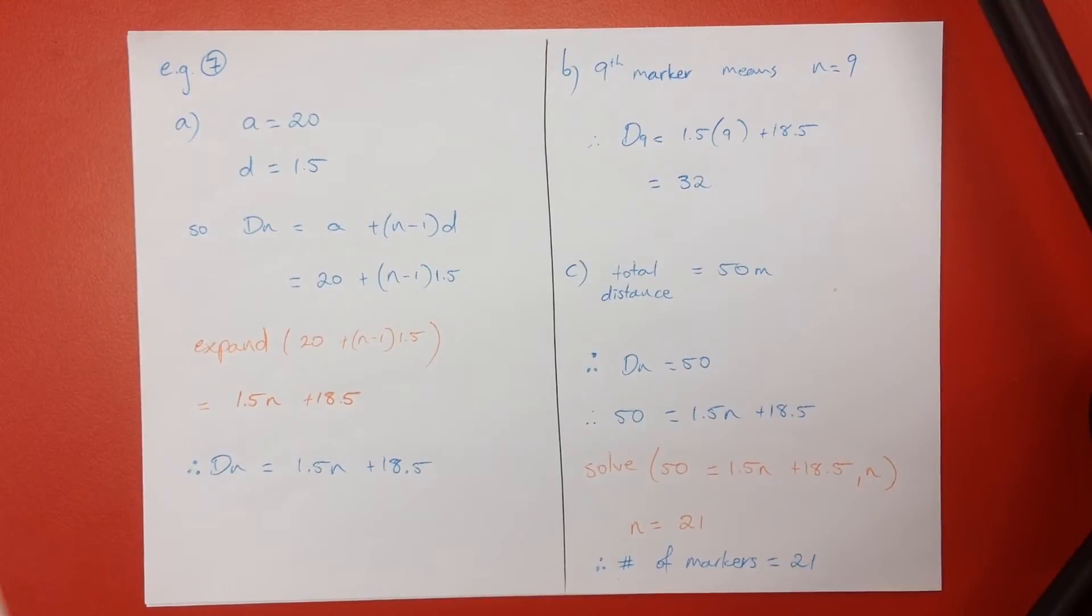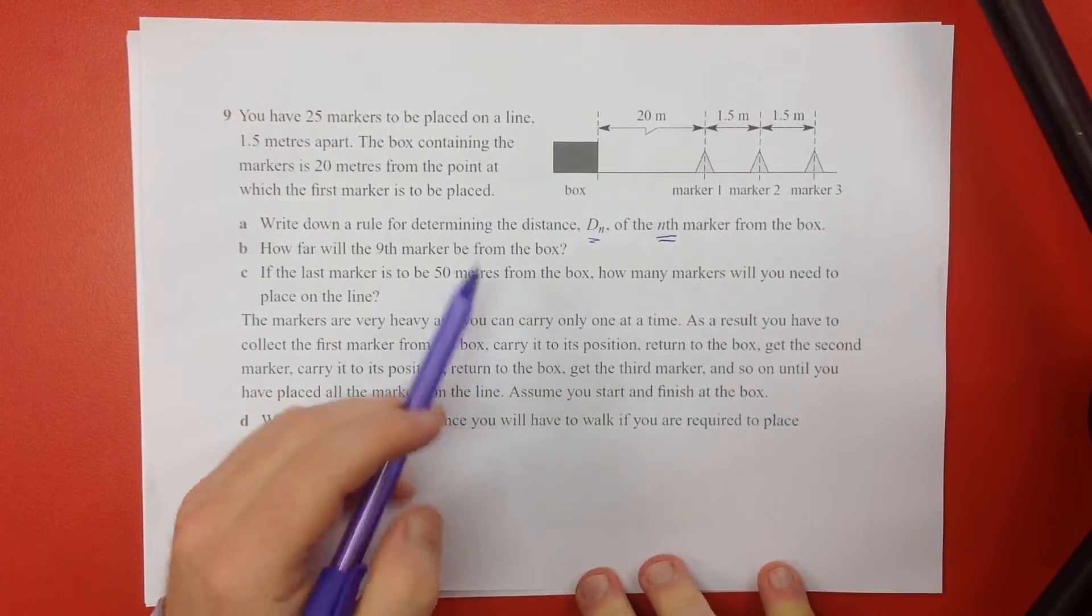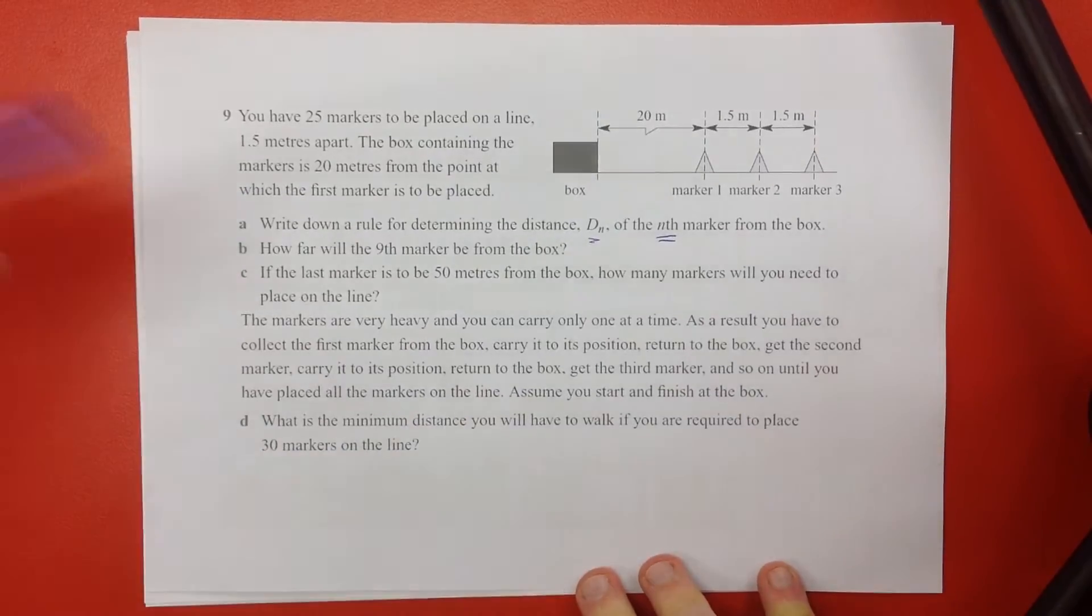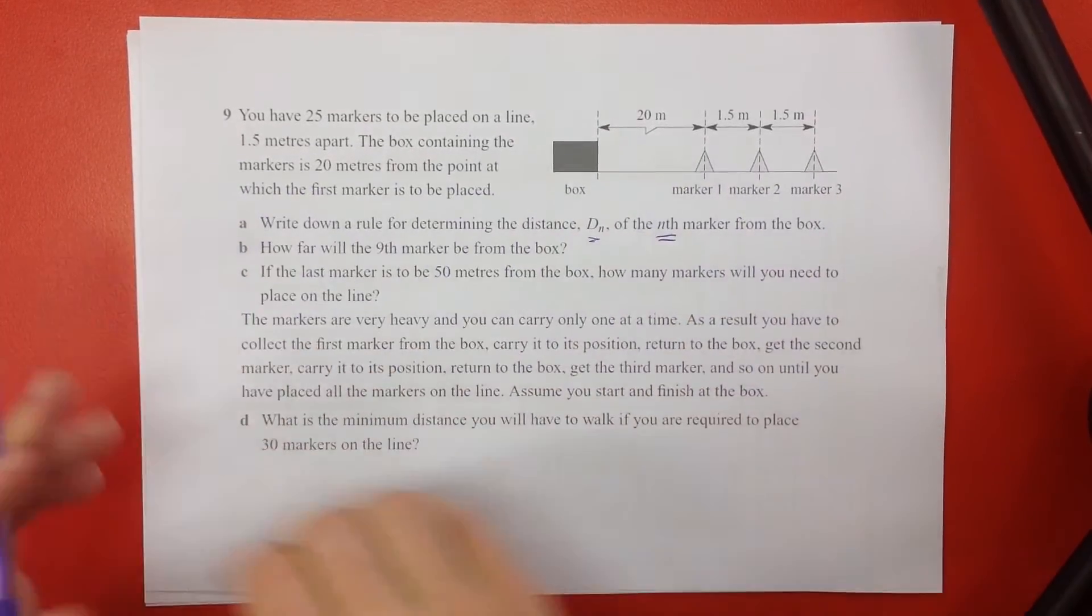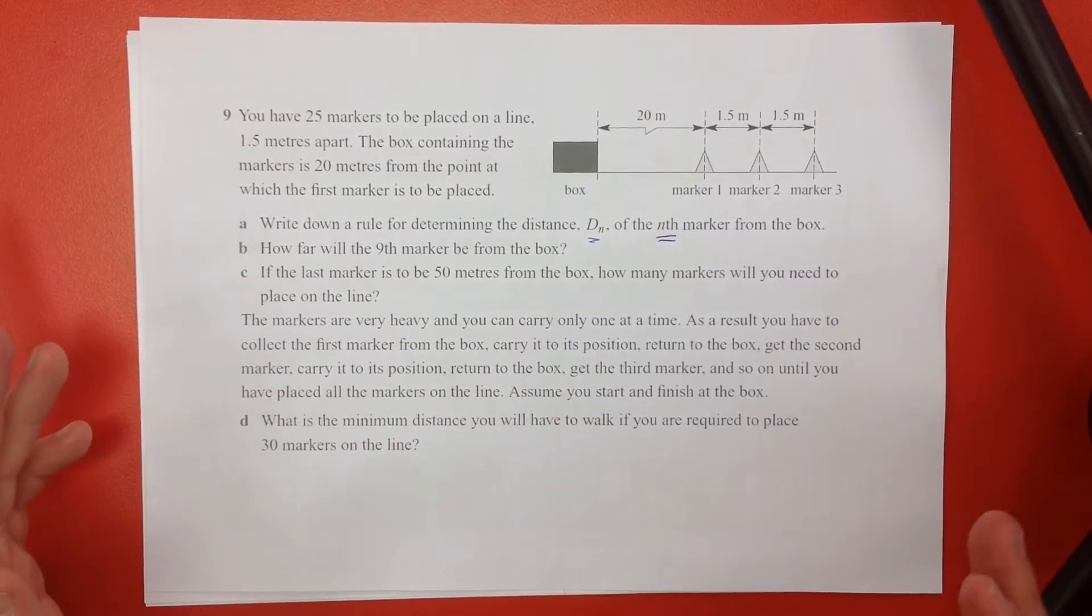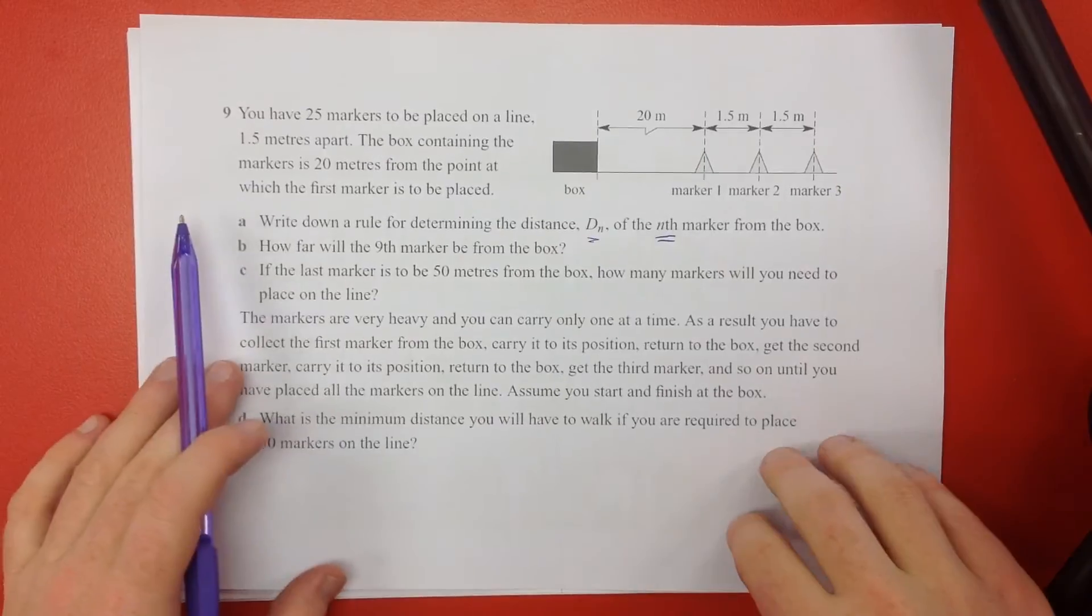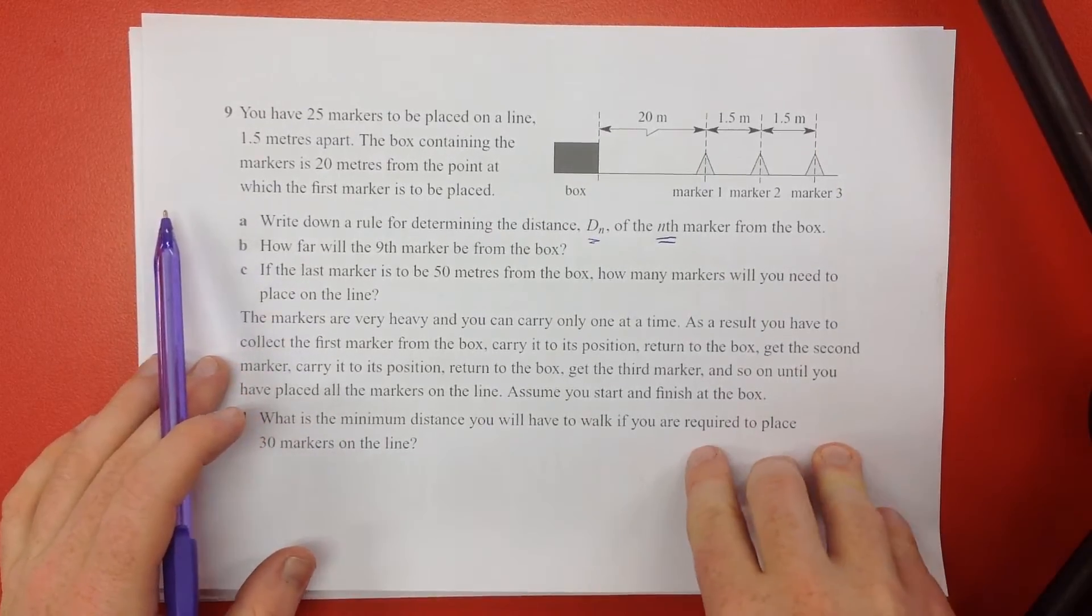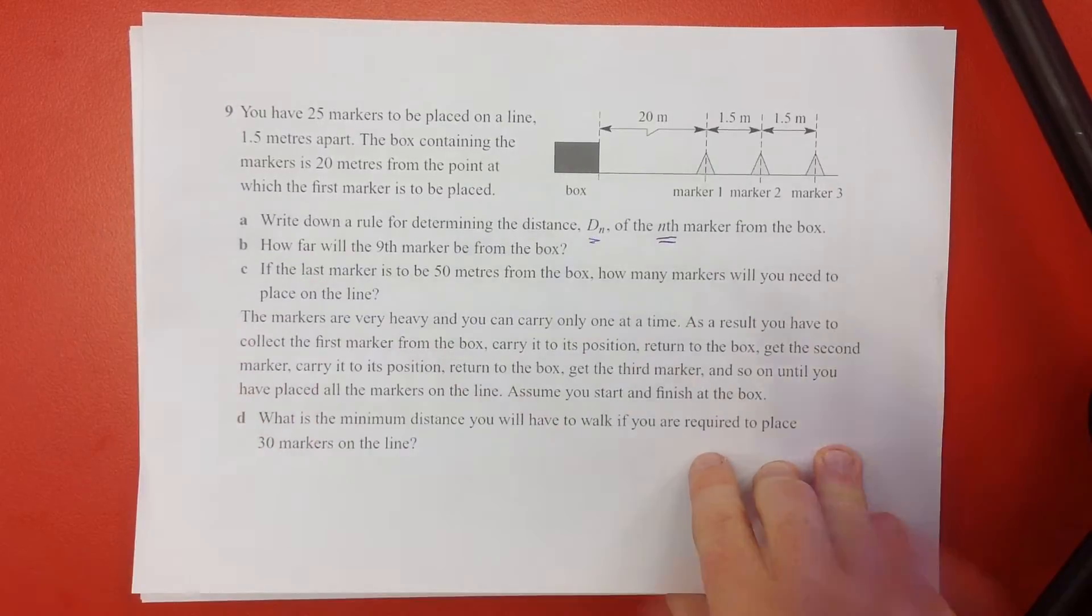So question C says, if the last marker is to be placed 50 metres from the box, how many markers can we have or will we need to put on our line? Because they've got to be 1.5 metres apart. So we need to find when the total amount, not the sum, just the total amount of markers, the total distance equals 50. So we're still looking in terms of a sequence, not a series. We're still looking in terms of a total single distance.